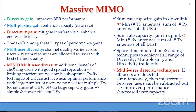Multi-user diversity can be combined with MIMO by choosing users with good spatial separation. The sum rate capacity gain in the downlink is proportional to the minimum of the total number of transmitting antennas and total number of antennas of all users. Even if each user uses only a single antenna, the sum rate capacity is proportional to the minimum of these two quantities. Similarly for the uplink.